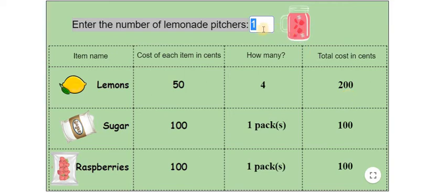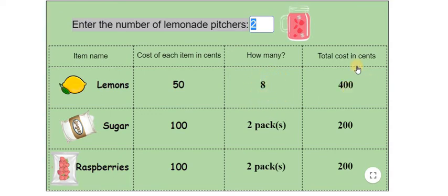Now let us change the number of lemonade pitchers to two and see how this number and this cost changes. There you go — for two pitchers of lemonade we need eight lemons and the total cost is 400 cents.